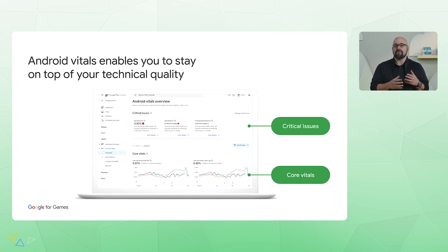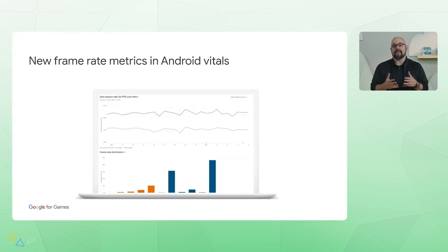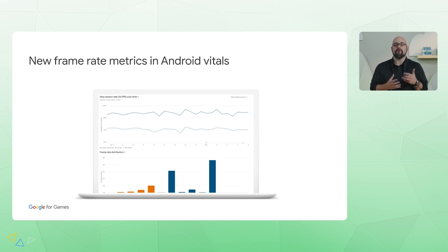Second, you'll now also receive warnings if there's a risk that your app's visibility will be affected. And third, starting today, Android Vitals will include frame rates for games in the form of measuring slow sessions, so you can understand when your game is visually janky across the device ecosystem.